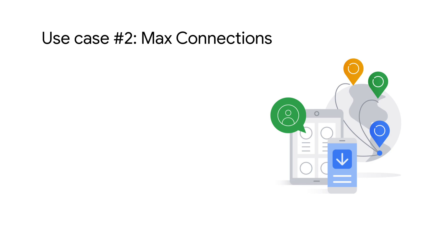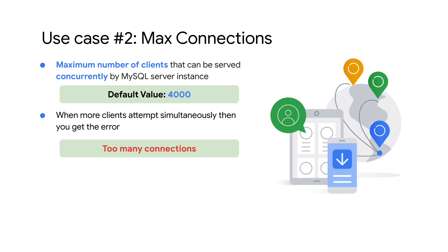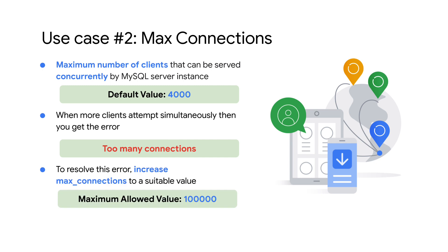Now let's look at another commonly used database flag: max_connections. This is a system variable that controls the maximum number of clients that can be served concurrently by a MySQL server instance. It is set with a default value of 4,000 for most machine types. If more clients attempt to connect and reach the default limit, clients will get the error 'Too many connections' as all available connections are in use. To resolve this error, you can increase the value of max_connections to a suitable value. The maximum allowed value is 100,000.